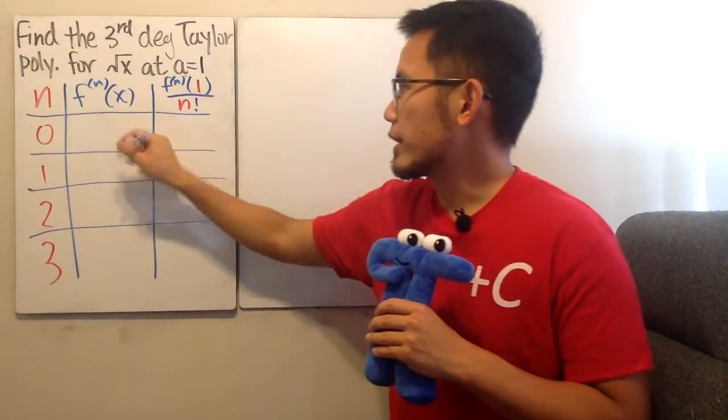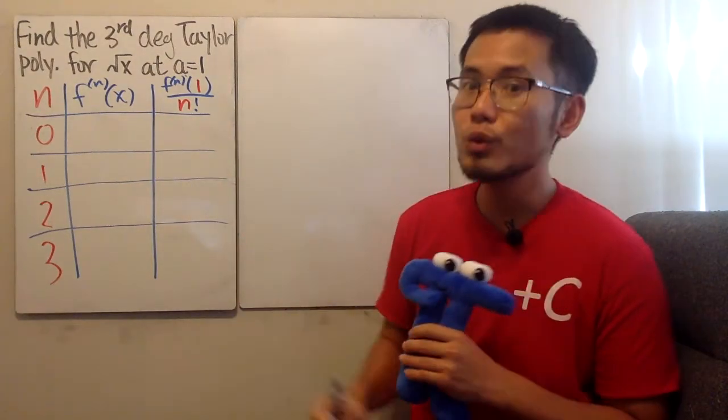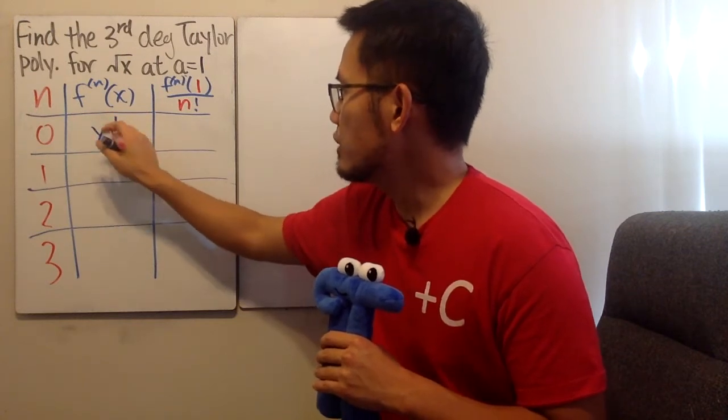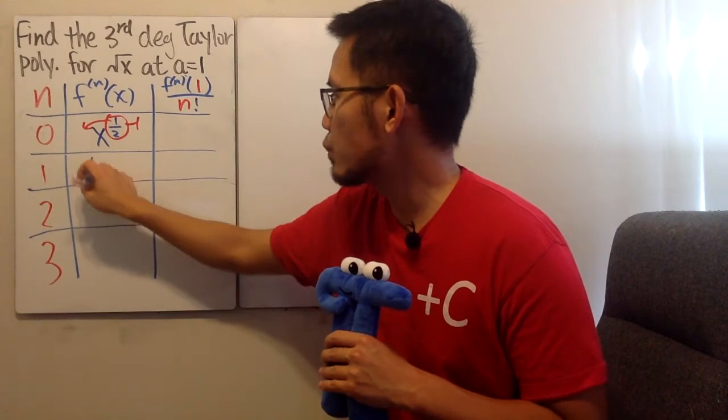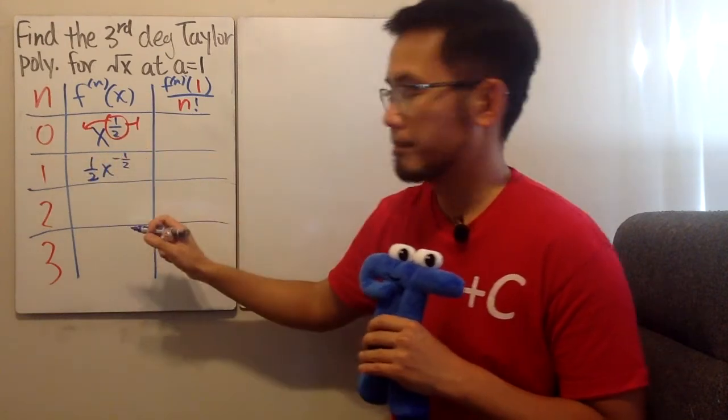From any series you wrote, this right here is just the original, and we have to differentiate square root a lot. So, let's write it as x to the 1 half power. Differentiating this one time, bring the 1 half to the front, minus 1. We get positive 1 half x to the negative 1 half. And then continue.